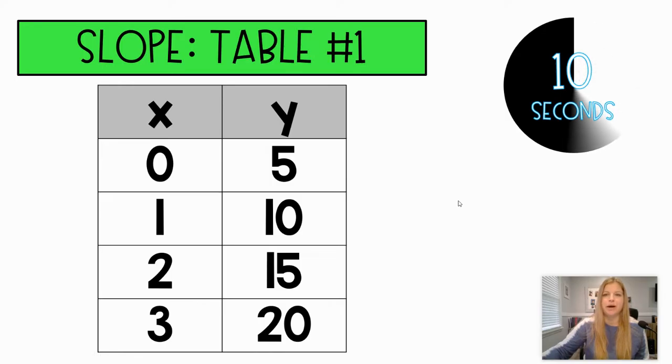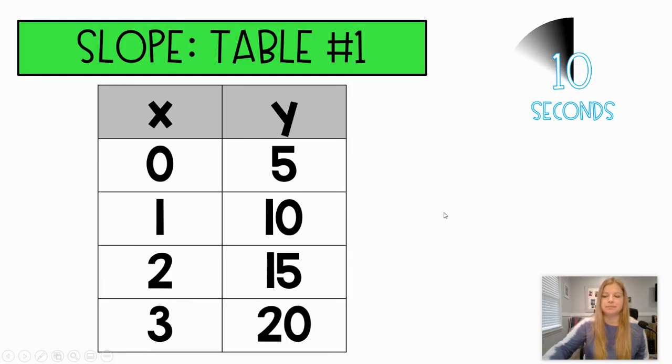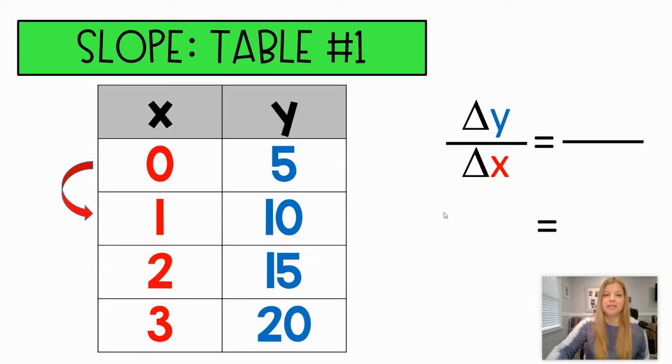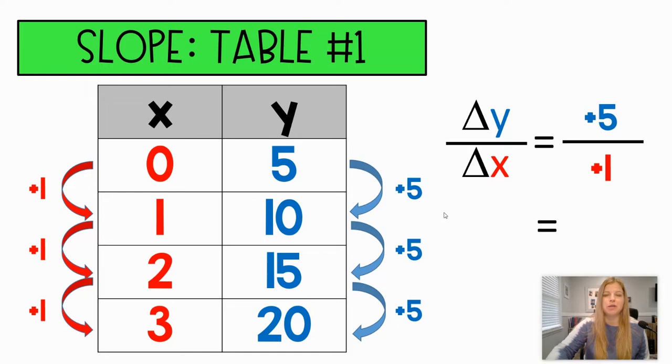Remember it's the change in y over the change in x. Okay, hopefully we got this. The change in x was adding by one. The change in y was adding by five. So my slope is five over one, which is just five.